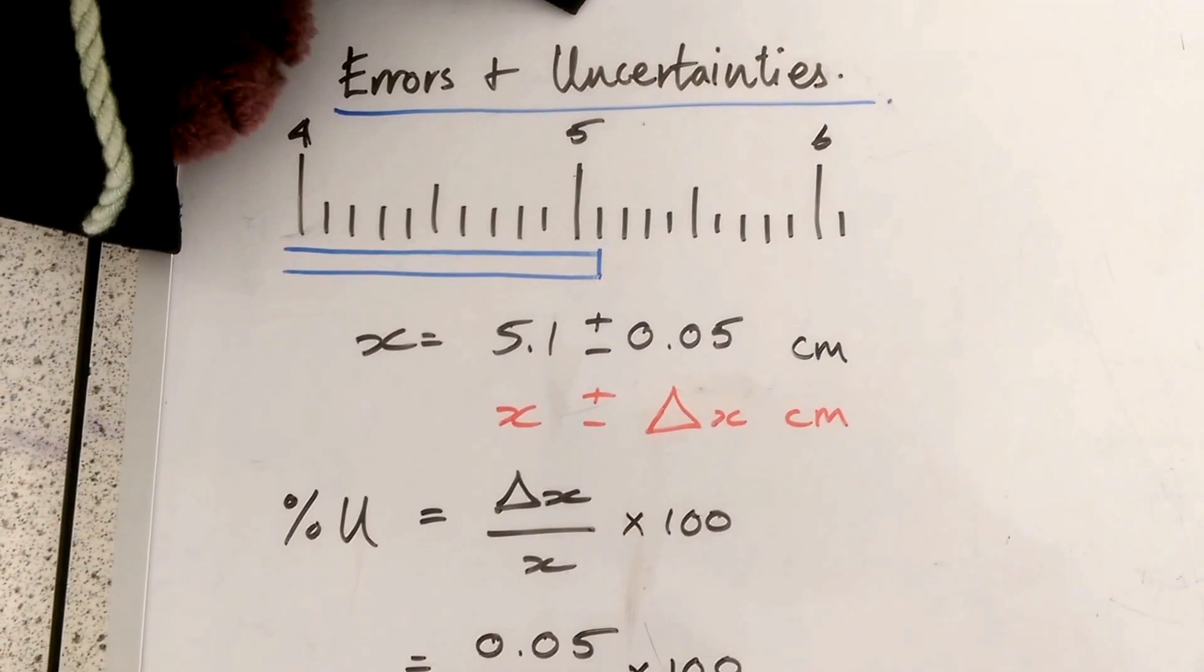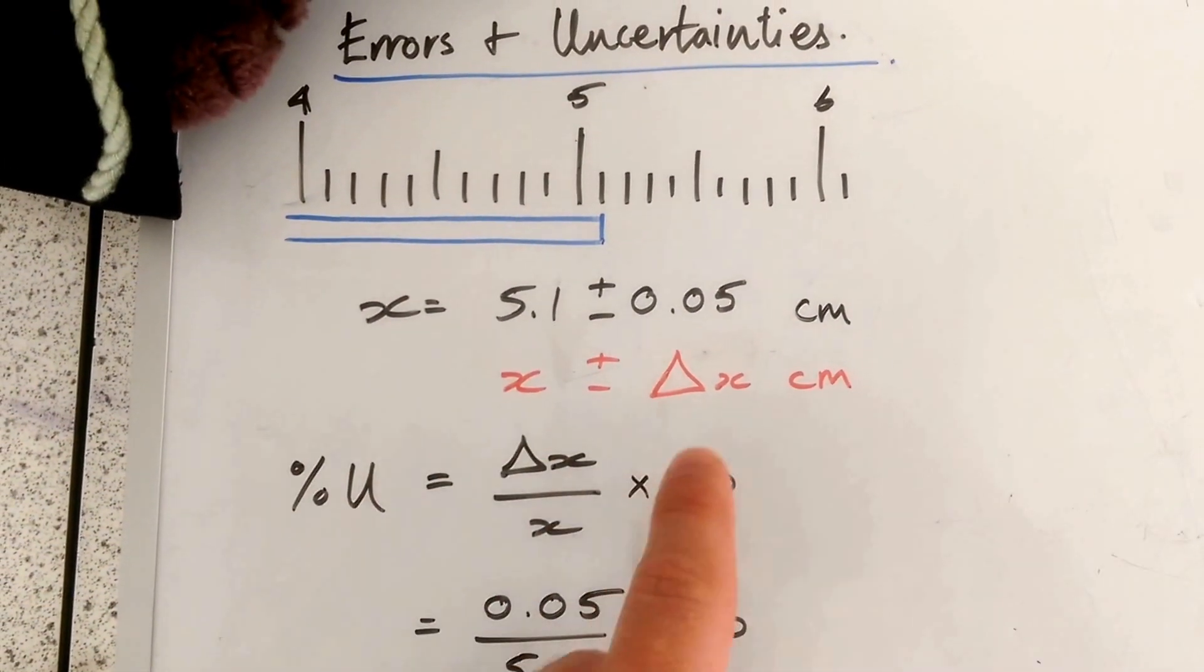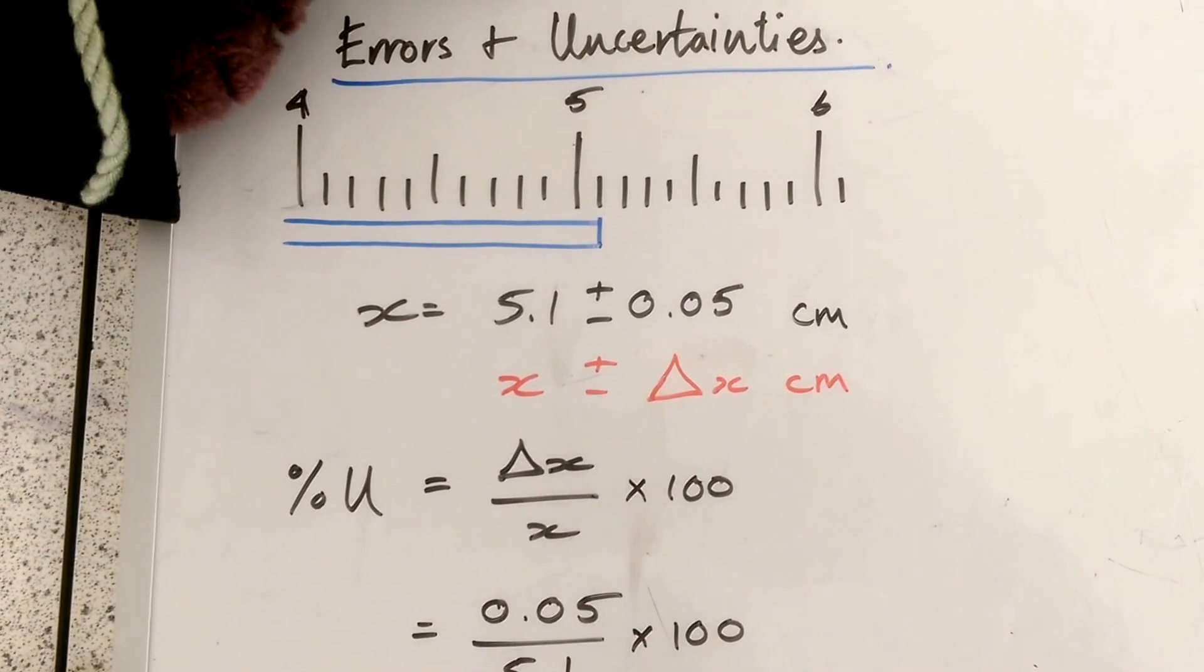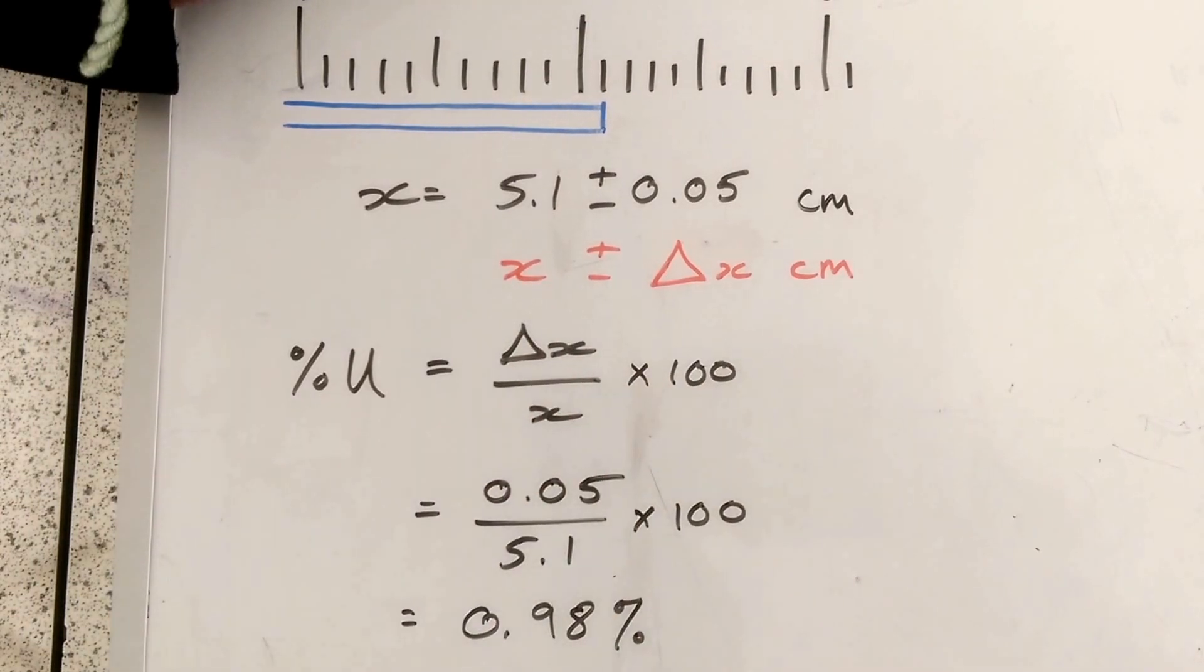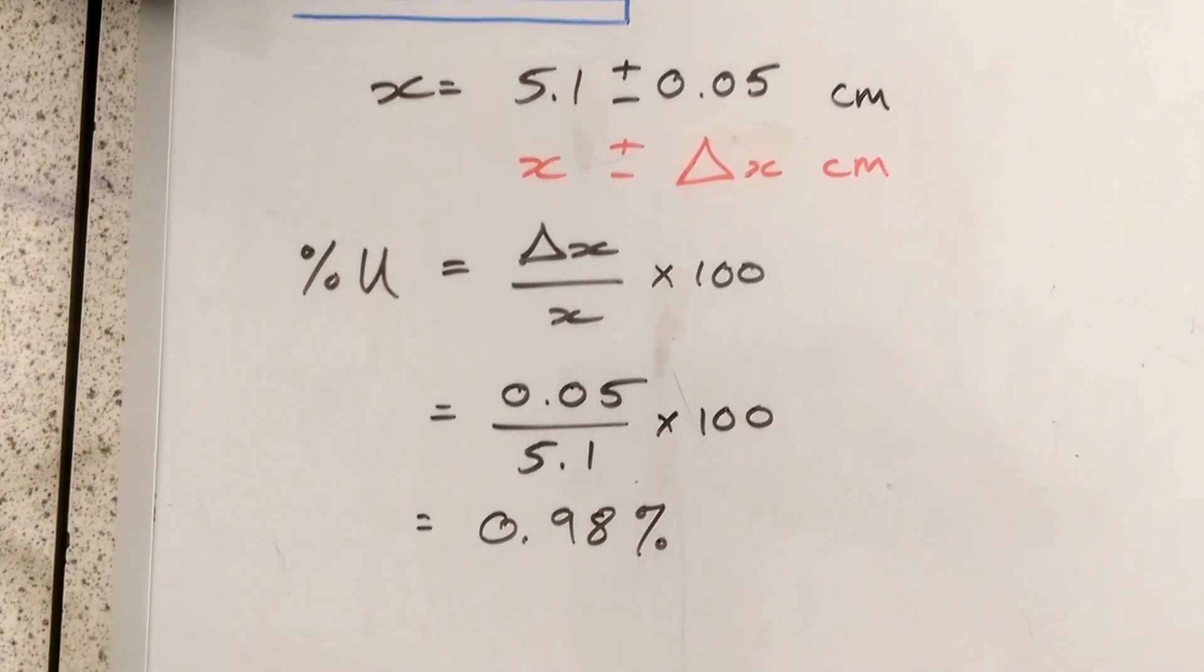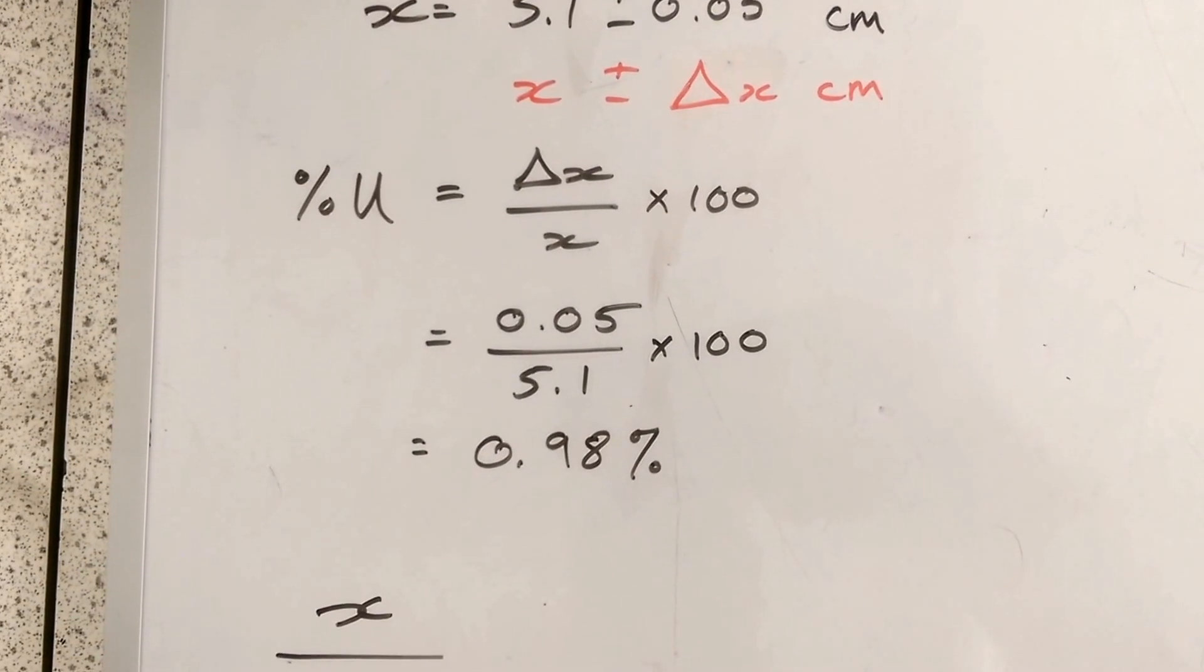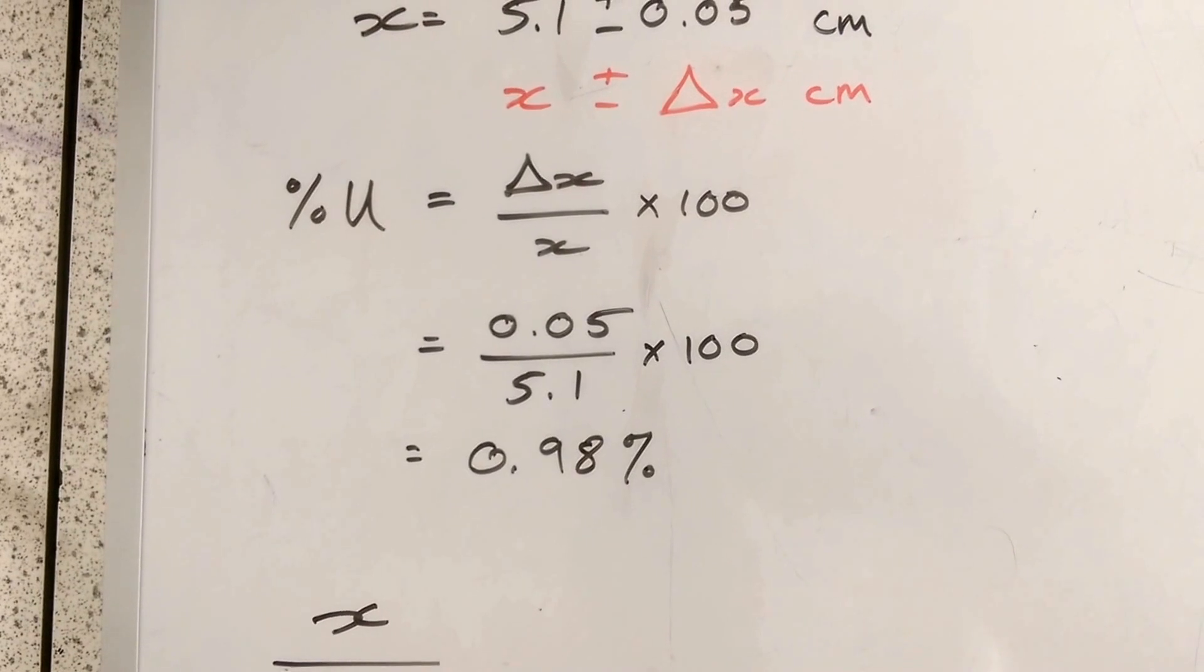We can use that to calculate a percentage error. We're going to use the notation here: X is the value and delta X is the uncertainty or the error. So the percentage uncertainty is the error over the measured value times 100 to make a percent. Do that and you've got 0.98%, which is not a bad error in anyone's book.